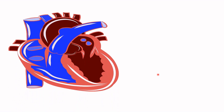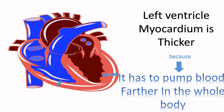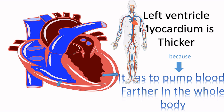Now let's see the walls of the ventricles. The left ventricle myocardium is thicker and bigger compared to the right ventricle myocardium. This is because the left ventricle myocardium has to pump blood further throughout the whole body. That is why the left myocardium, or myocardial muscle, is thicker compared to the right myocardium.